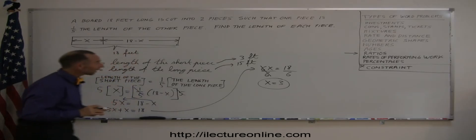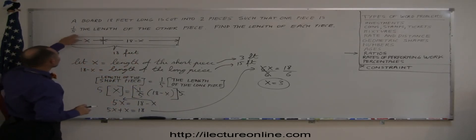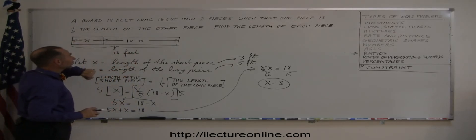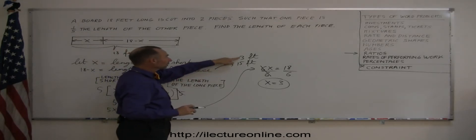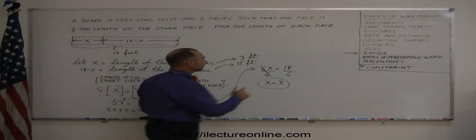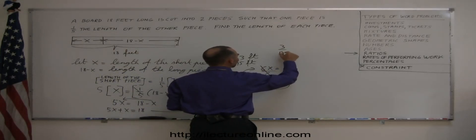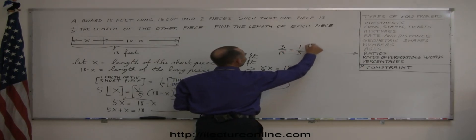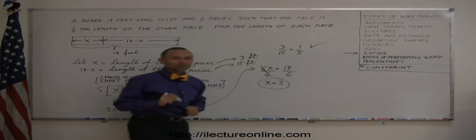And just to make sure we did this correctly, is the short piece exactly one-fifth the length of the other piece, the long piece? 3 is exactly one-fifth of 15? It should be, because 3 divided by 15 is the same as 1 over 5, and bingo, we know we did it correctly.